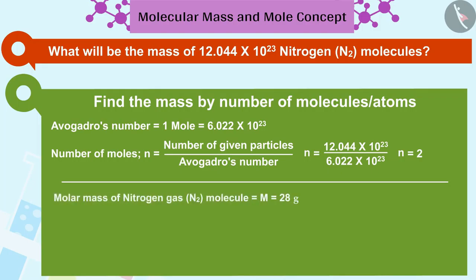We will then multiply the number of moles by the molar mass of nitrogen gas N2 by the process learned in the previous example to find the mass. Thus, 12.044 into 10 raised to 23 nitrogen gas N2 molecules has mass of 56 grams.